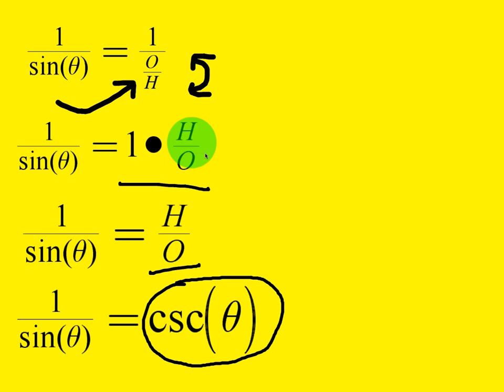So now we have 1 times H over O. 1 times H is H, which again stands for hypotenuse. The bottom remains O for opposite. And if you recall, hypotenuse over opposite, that is the definition of cosecant. So this is much like the first proof that we just did.